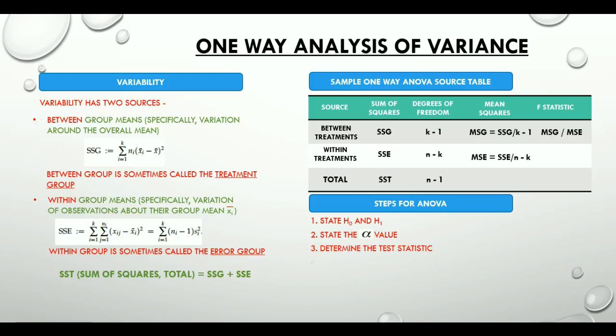Define the rejection criteria. There are two ways to do it. Firstly, if F statistic is greater than the critical value. Or the second option would be if p value is less than significance level.